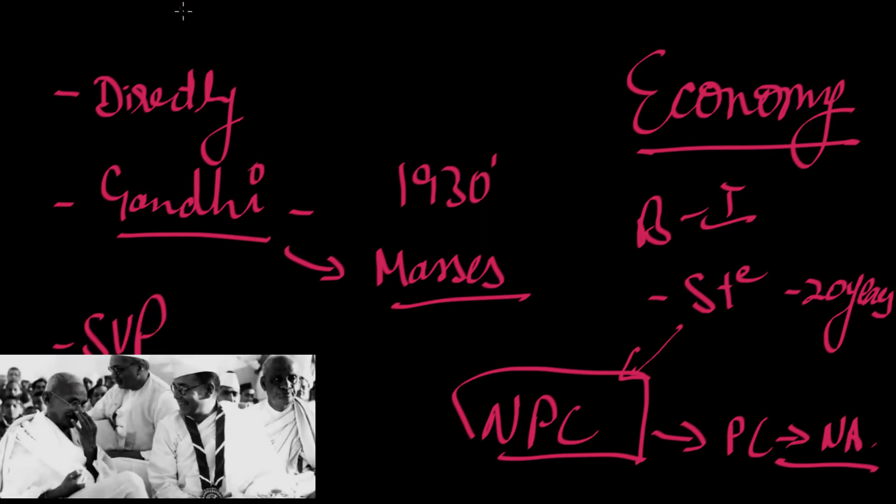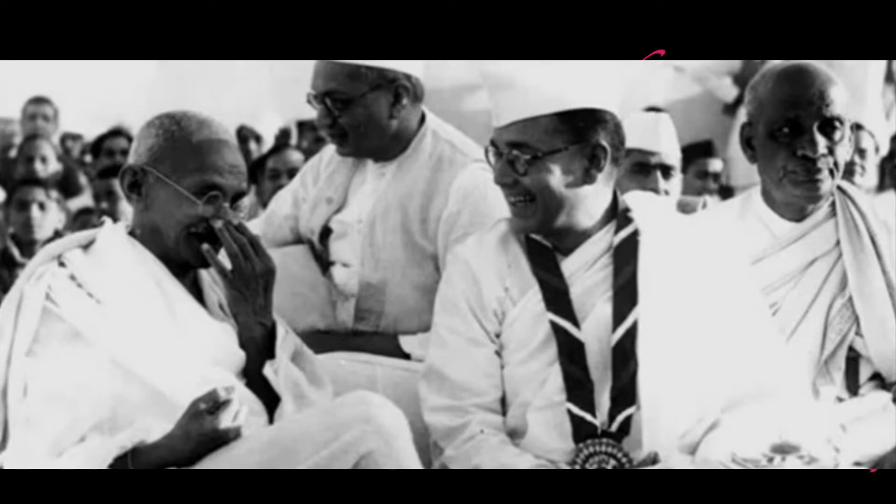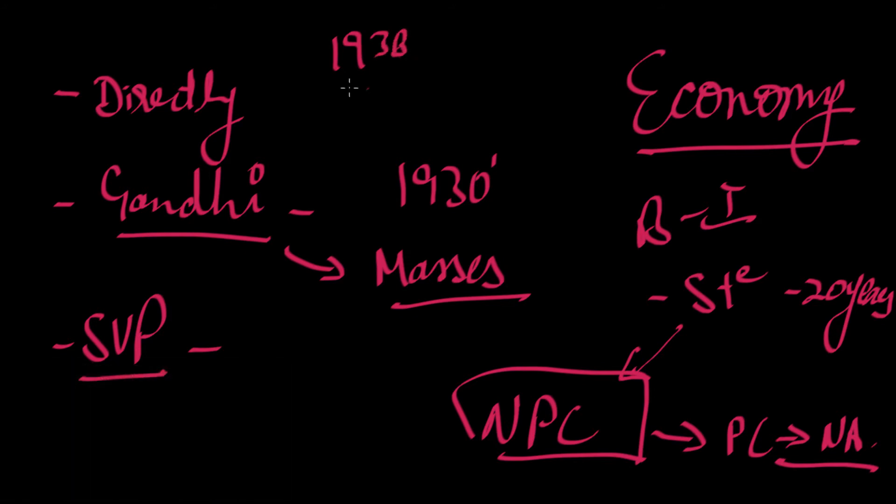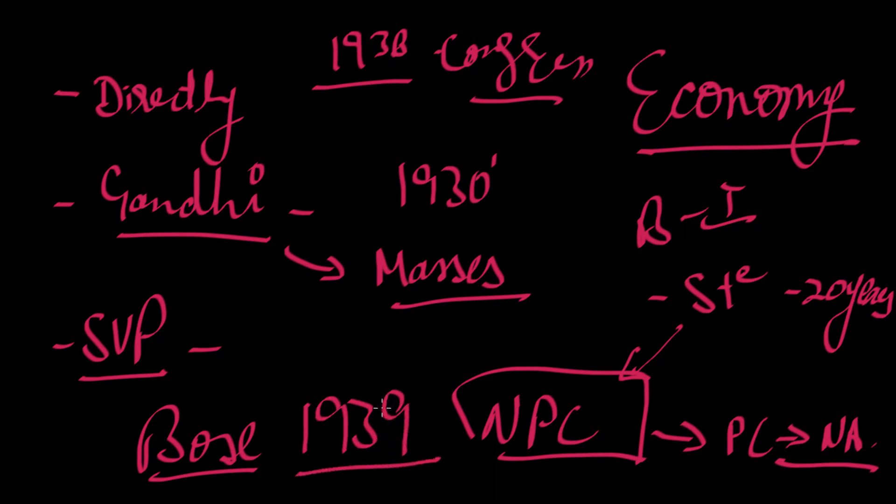There were some issues with Sardar Vallabhbhai Patel also, between Bose and Patel. But this does not mean that they were always fighting or arguing. They were great nationalists. All of them worked together for India. You have to understand the context in which their differences arose, and that was in the context of a few basic principles. This was the story of Bose as the head of the Congress in 1938 session.